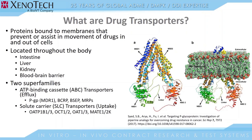The second main superfamily of transporters are the solute carrier transporters, also called uptake transporters. These transporters do not require ATP and are responsible for moving compounds from outside of the cell to inside. Some of the main uptake transporters are OATP-1B1 and 1B3, OCT-1 and 2, OAT-1 and 3, and MATE-1 and 2K.